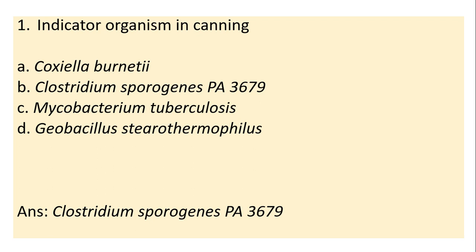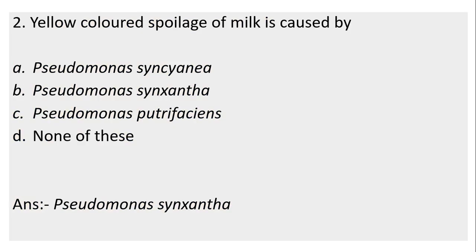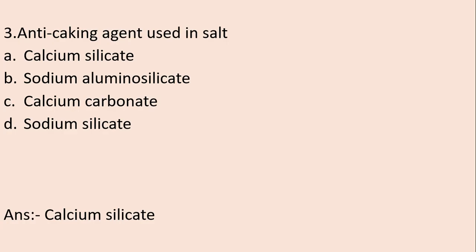Geobacillus stearothermophilus is used as indicator organism in sterilization. Next question: Yellow colored spoilage of milk is caused by Pseudomonas syncyanea. Pseudomonas syncyanea causes blue colored spoilage of milk. Pseudomonas putrefaciens causes brown colored spoilage of milk.